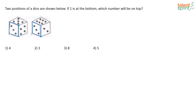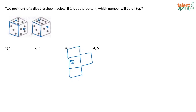For each face of a dice, you will have four adjacent faces. So which are the four adjacent faces of the face with three dots? One adjacent face has four dots, another has five dots, another has two dots, and the other has six dots. So face 3's adjacent faces are 6, 2, 4, and 5.